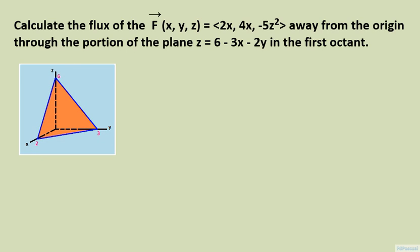Since we are determining the flux that is supposed to be pointing away from the origin, which is behind the plane, there will be an upward component to the normal vector that we are supposed to use.